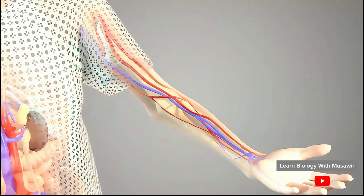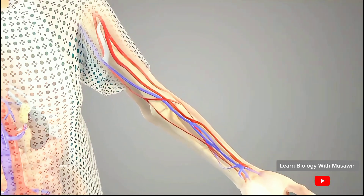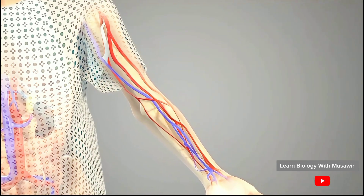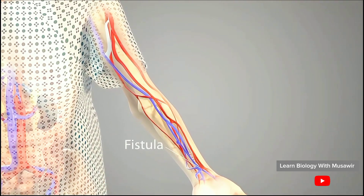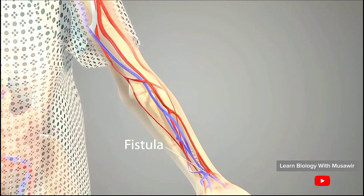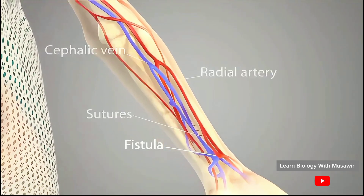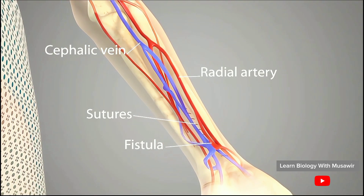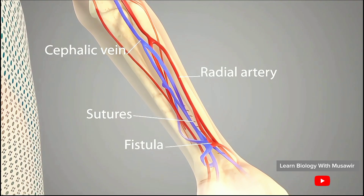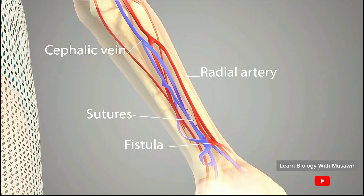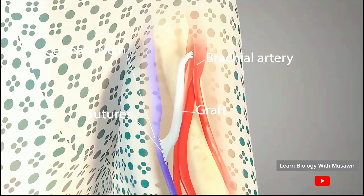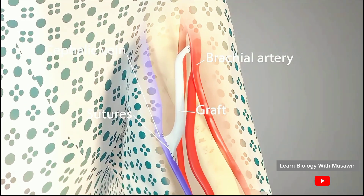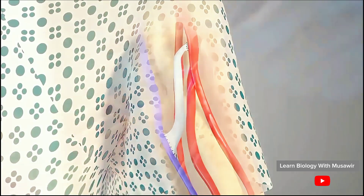Hemodialysis typically requires long-term vascular access through an arteriovenous, or AV, fistula or graft. An AV fistula is a direct connection made surgically between an artery and a vein. An AV graft is an indirect connection, usually with tubing, between an artery and a vein.